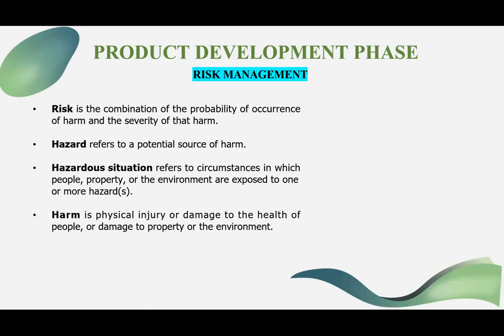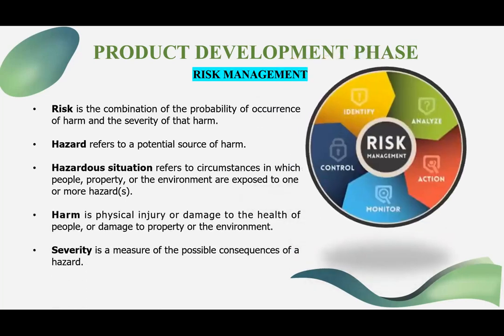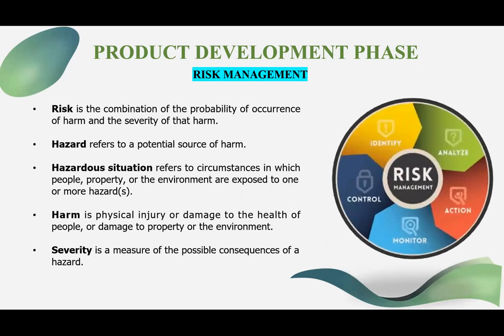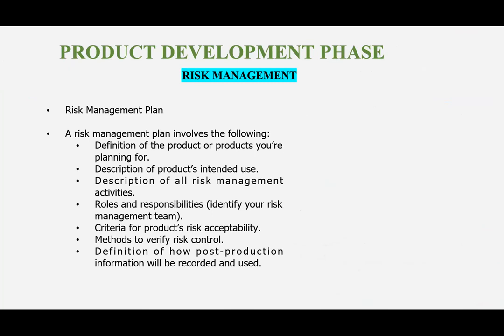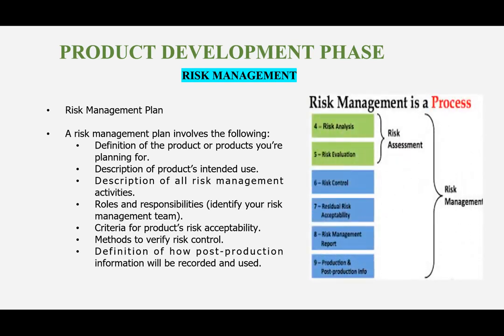Risk management must be performed as per ISO 14971. Key definitions include hazard, hazardous situation, harm, and severity. You must identify risk, analyze it, evaluate it, put control measures in place, and then assess residual risk against an acceptability criterion. Prepare a risk management plan along with a risk management report. Risk identification starts from raw material entering your premises — from supplier evaluation, supplier quality agreements, GRN records, MSDS, and COA — all the way through manufacturing, dispatch, and post-market surveillance. Risk assessment integrates preclinical and clinical evaluation reports.